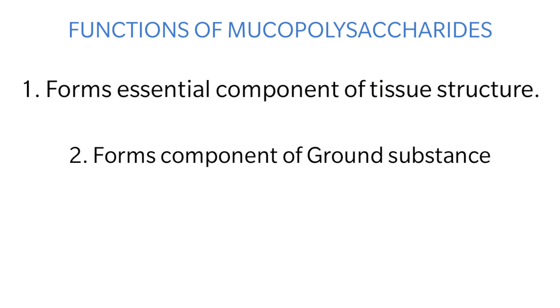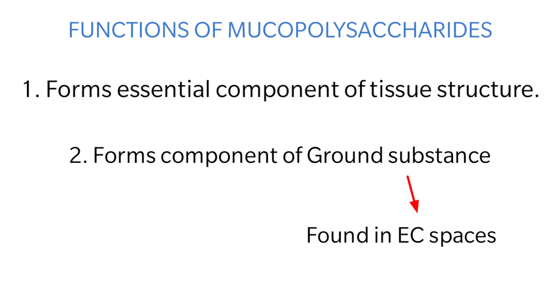The second function is that the ground substance found in the extracellular spaces — in which fibers are embedded — is composed of GAGs. So the ground substance present in the extracellular spaces of all important tissues is essentially made up of glycosaminoglycans. These are the two important functions of mucopolysaccharides to keep in mind.